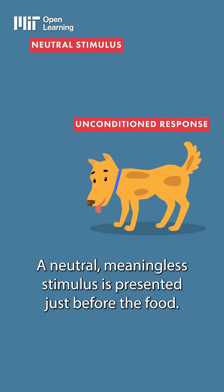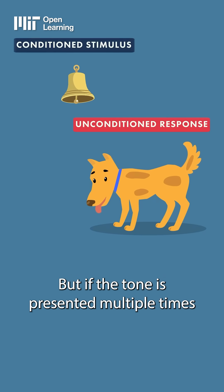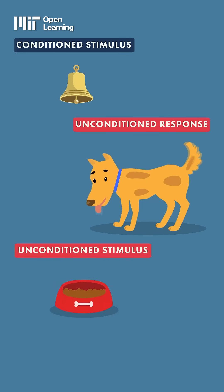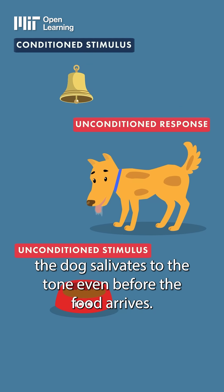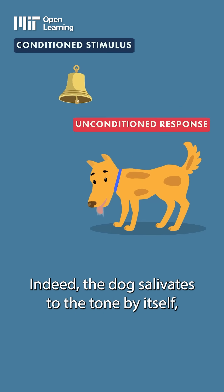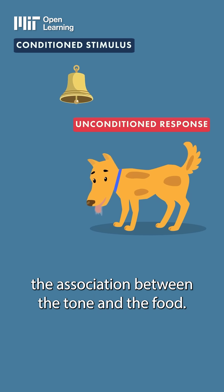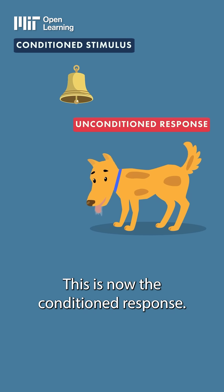A neutral, meaningless stimulus is presented just before the food. The tone then becomes the conditioned stimulus, but if the tone is presented multiple times just before the food is given, the dog salivates to the tone even before the food arrives. Indeed, the dog salivates to the tone by itself, having learned by classical conditioning the association between the tone and the food. This is now the conditioned response.